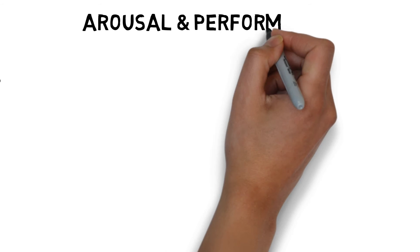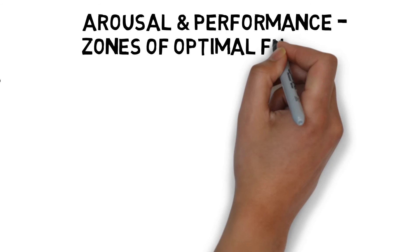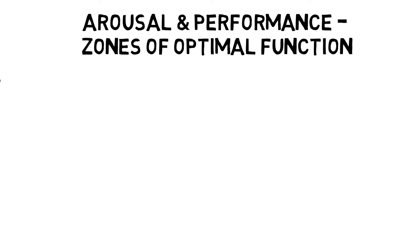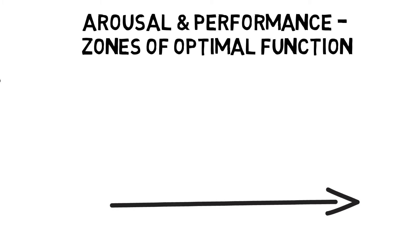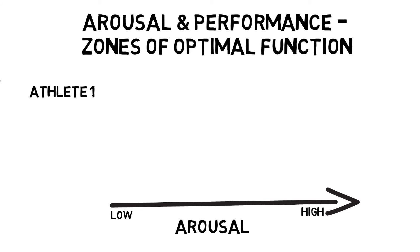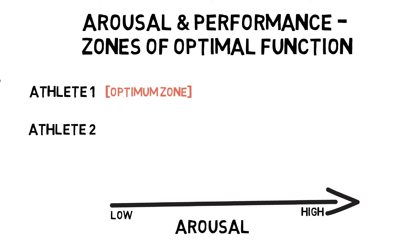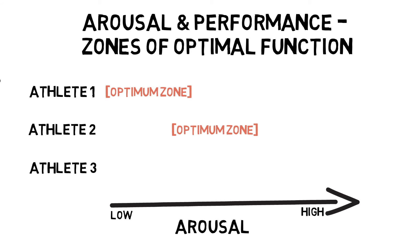Zones of optimal function suggest that rather than occurring at the midpoint of the arousal spectrum, there is an optimal zone in which a performer will achieve optimal performance. This zone could alter depending on the type of skill, level of performance, and personality of the performer.